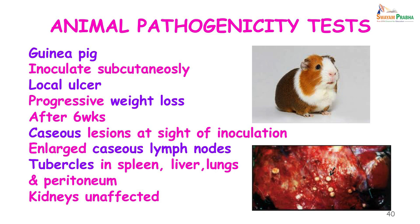The line probe assay is another molecular test useful for detecting Mycobacterium tuberculosis and identifying mutations causing resistance to both first- and second-line anti-tubercular drugs. It is usually performed on growth of Mycobacterium tuberculosis but can also be done directly on sputum samples with 3+ grading. Animal pathogenicity testing is now of historical importance: guinea pigs inoculated subcutaneously develop a local ulcer, progressive weight loss, and after 6 weeks a caseous lesion — with enlarged caseous lymph nodes and tubercles in the spleen, liver, and peritoneum; the kidneys are typically unaffected.